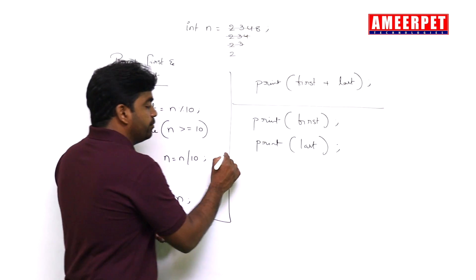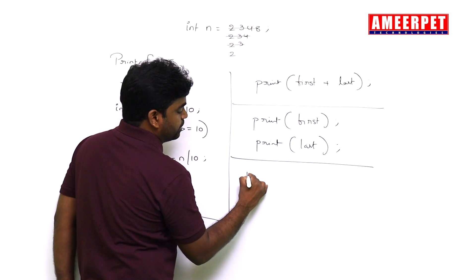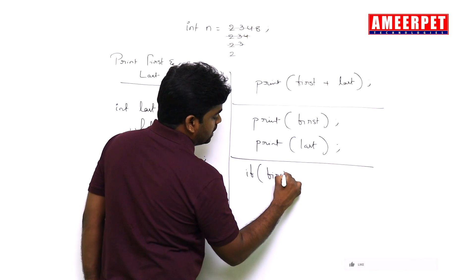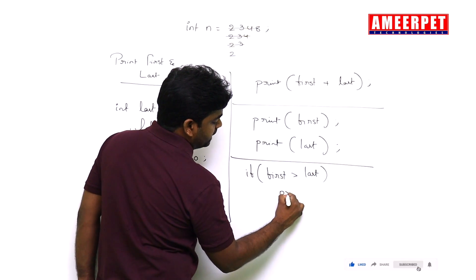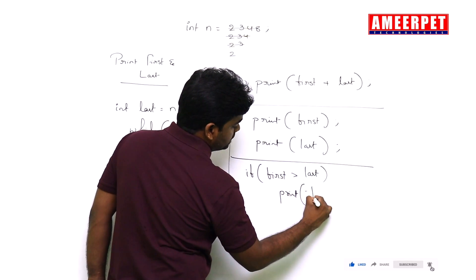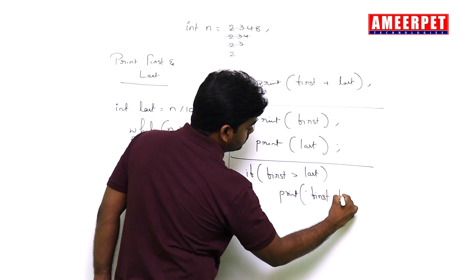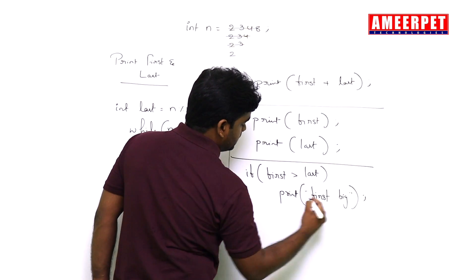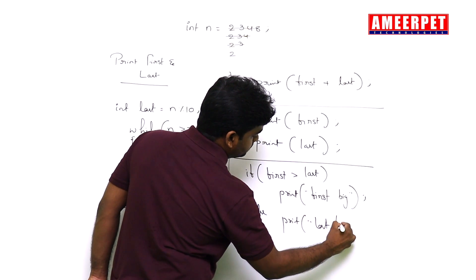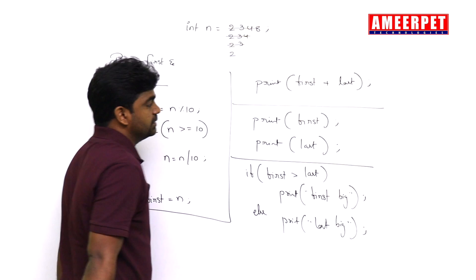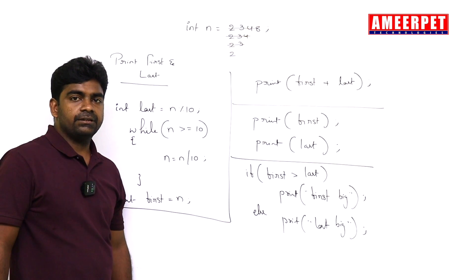Now if they ask among first and last digits which one is bigger: if first is greater than last, then print first digit is bigger, else print last digit is bigger.